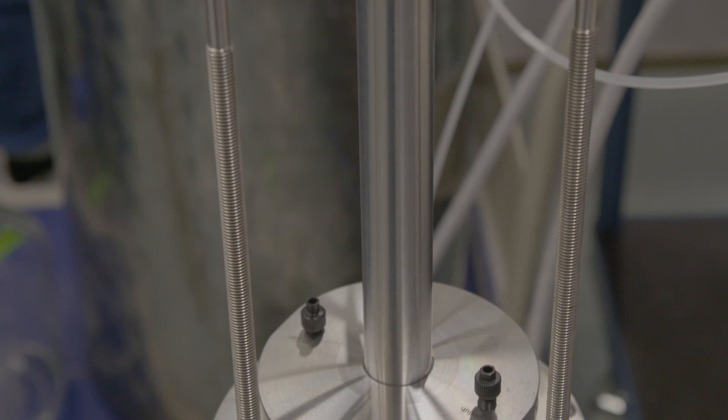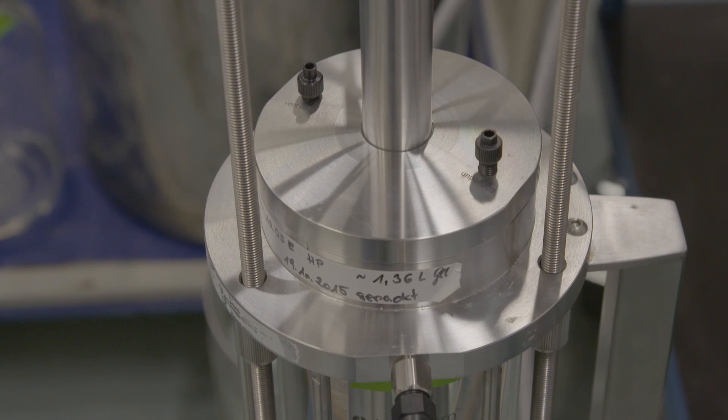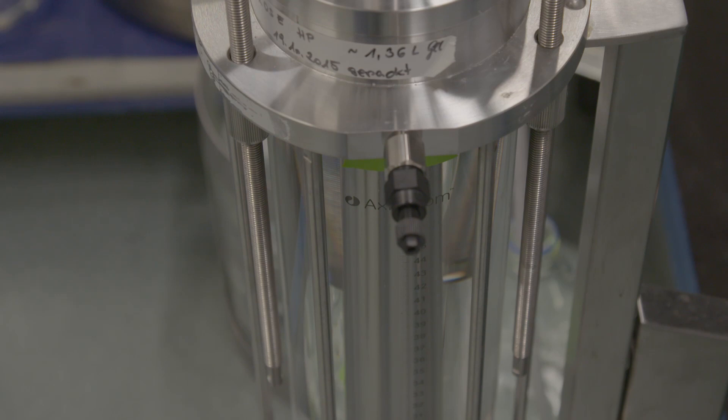In our plant, we are equipped with an ÄKTA pilot system with flow rates up to 800 millilitres per minute. Columns that can be operated with this system contain up to 5 liters of stationary phase.